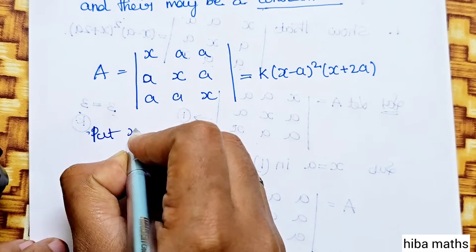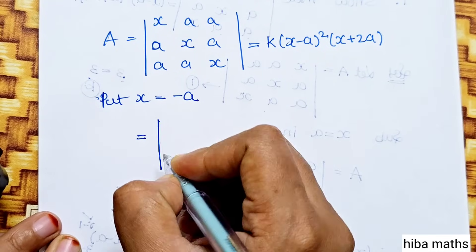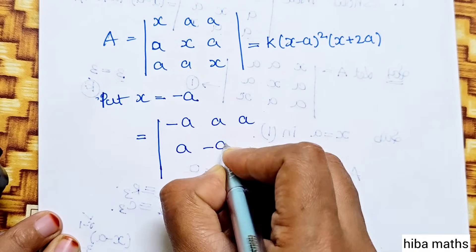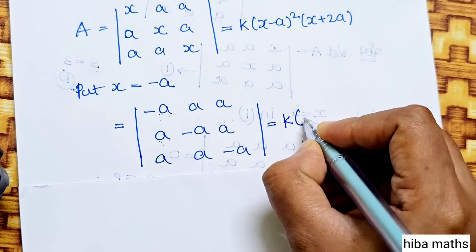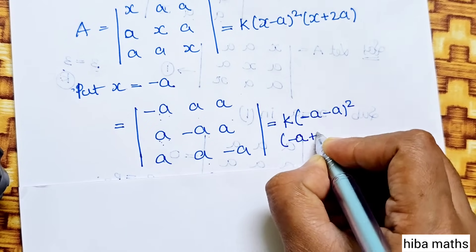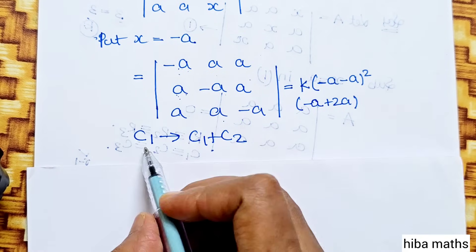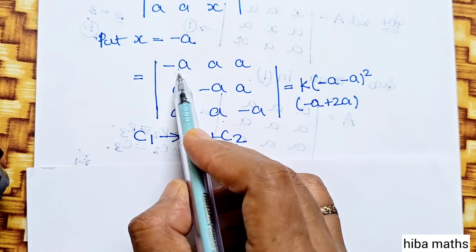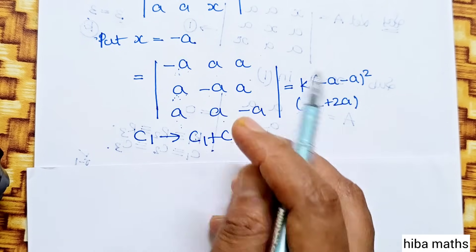If x is equal to minus 2a, then our determinant has entries (minus 2a, a, a), (a, minus 2a, a), (a, a, minus 2a). On the right-hand side we substitute x equal to minus 2a. One column operation is C1 changes to C1 plus C2. Column 2 gives (minus a plus a) equals zero, and (a minus a) equals zero, then (a plus a) equals 2a.